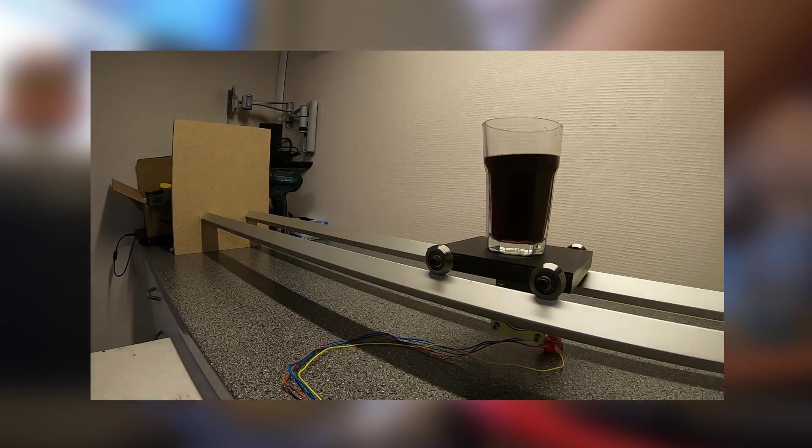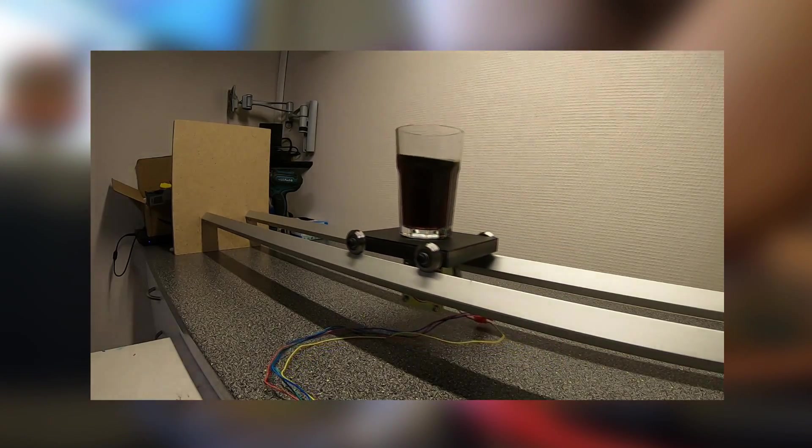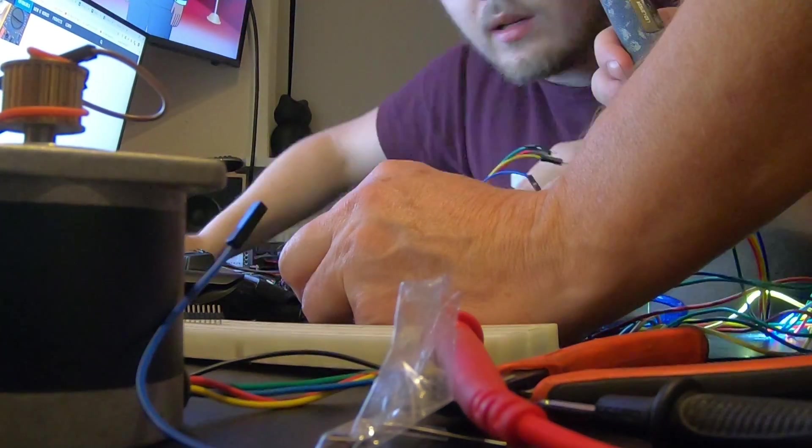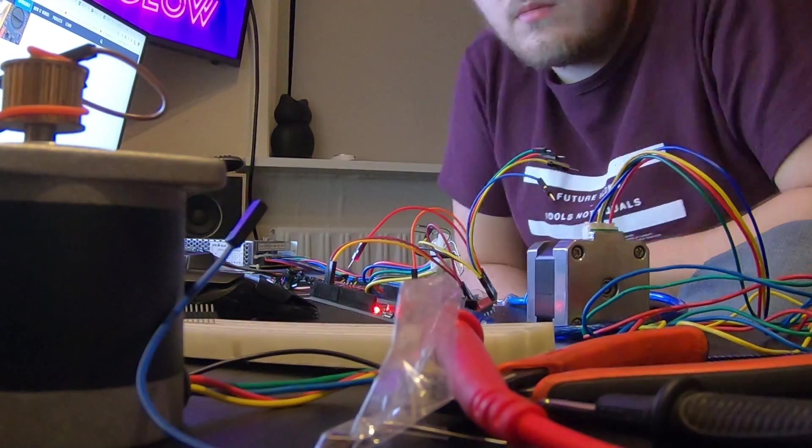Other than that I also made sure to code that if it touches the end switch then it would move back a bit. The code is all commented and can be found in the description below. The end switch should be wired like shown here.